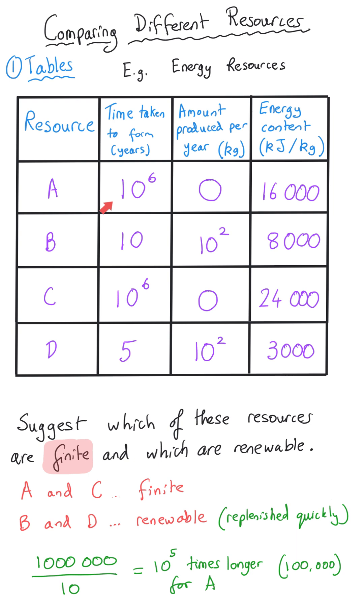Or 10 to the 5 times faster that we get B forming. And so that means it's five orders of magnitude faster to produce resource B than it is resource A.